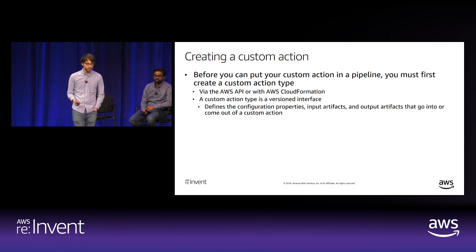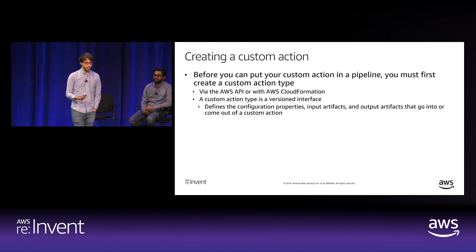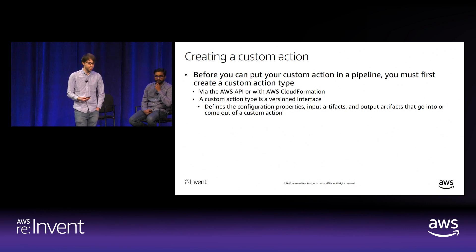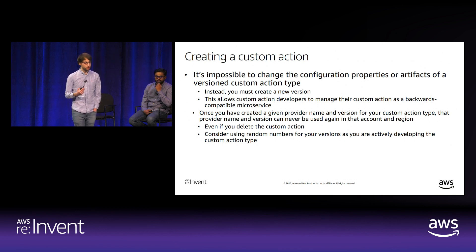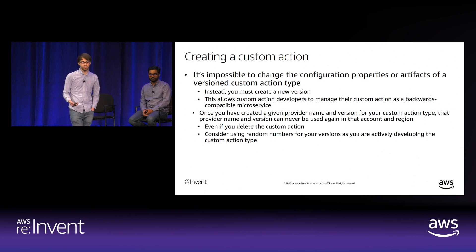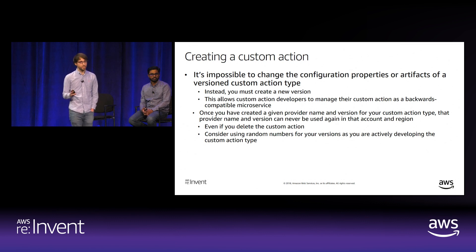Before deploying a custom action, you must first create a custom action type via API or CloudFormation. A custom action type is a versioned interface defining configuration properties, input artifacts, output artifacts, provider name, and version. Once defined, you cannot change the configuration or artifacts—instead you must create a new version. This allows consumers to use a version in their pipeline without worrying about breaking changes. Once a provider name and version are consumed in an account/region, they can never be reused—even if you delete and recreate the custom action type.